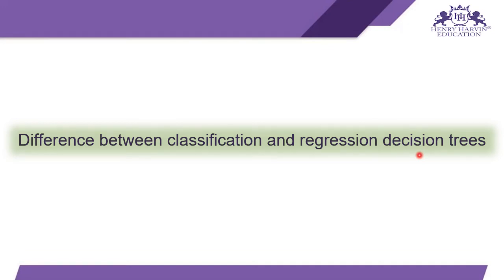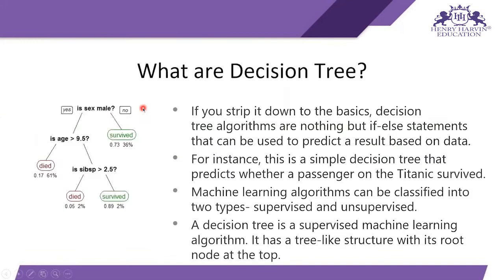First of all, what are decision trees? If you strip it down to basics, decision tree algorithms are nothing but if-else statements that can be used to predict a result based on data. We make a model, pass our input data, and expect the model to give some output — like predictions. In a decision tree, we make a tree-like structure using our data columns.